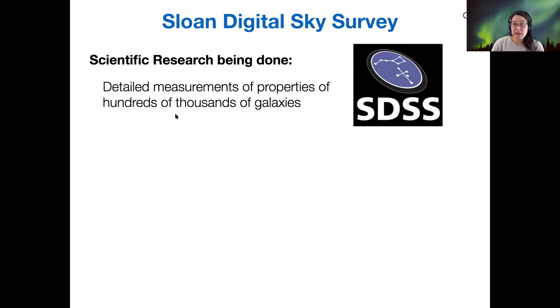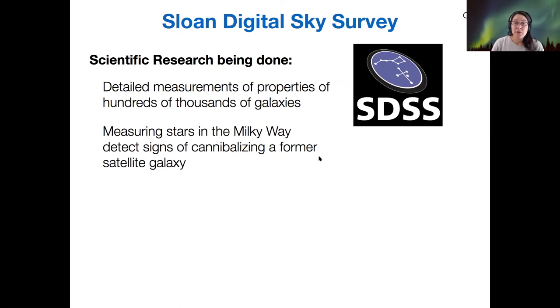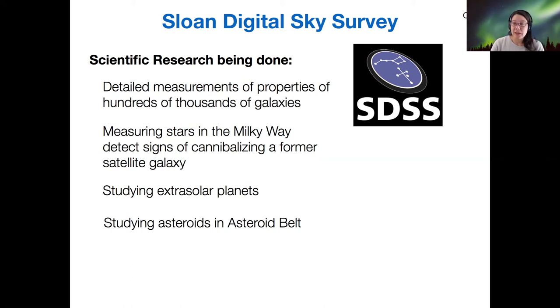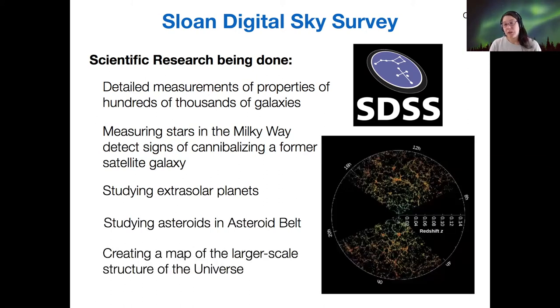Some of the things that they're doing is measuring specific properties of all those galaxies like their shapes and their colors. They're also measuring stars in the Milky Way so that we can try to find the traces of a former satellite galaxy that has been cannibalized. They're looking at extrasolar planets, asteroids in the asteroid belt.